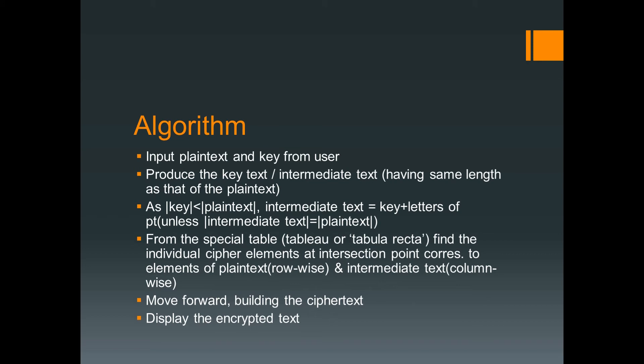Now let's move on to the algorithmic part. As usual, you will have to take the plain text as well as the key from the user. The intermediate text or key text will be produced according to two basic rules. The first rule: the length of the intermediate text will be equal to the length of the plain text. The first n characters, where n is the length of the key, will consist of the characters of the key. The remaining t minus n characters, where t is the total length of the plain text, will consist of the letters of the plain text from the first letter until the required position.